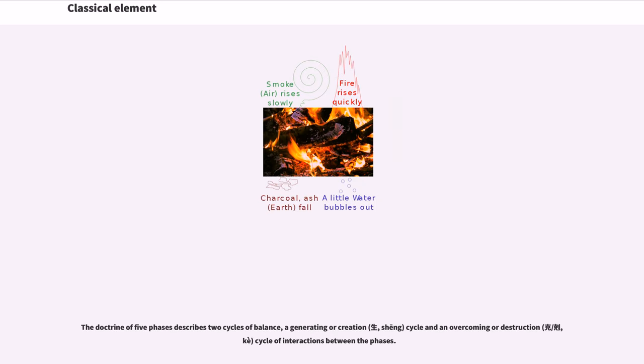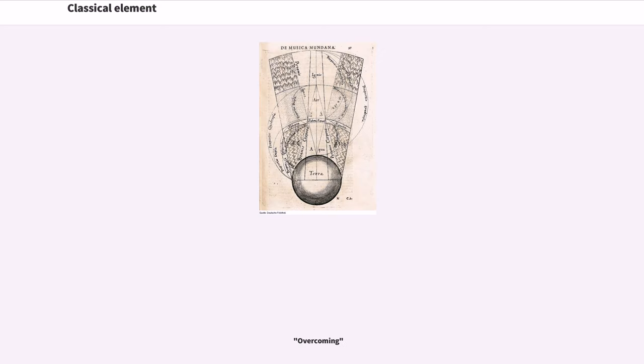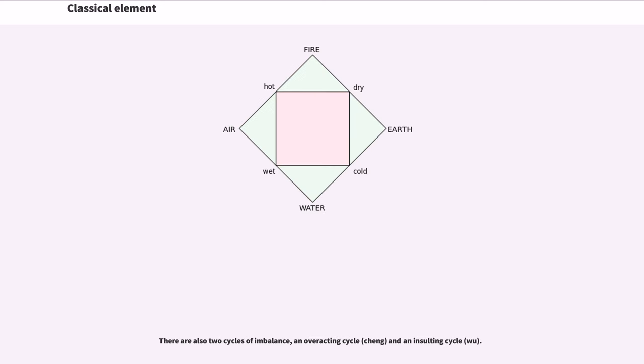The doctrine of five phases describes two cycles of balance: a generating or creation, sheng, cycle and an overcoming or destruction, ke, cycle of interactions between the phases. There are also two cycles of imbalance: an overacting cycle, cheng, and an insulting cycle, wu.